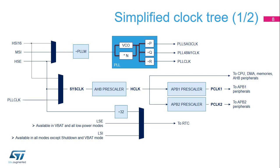The RTC clock is generated by the low-speed external 32.768 kHz oscillator (LSE), the low-speed internal 32 kHz RC oscillator (LSI), or the HSE divided by 32. This selection cannot be modified without resetting the backup domain. The LSE can remain enabled in all power modes and in VBAT mode. The LSI can remain enabled in all modes except shutdown and VBAT modes. Note that the P, Q, and R dividers present in the PLL are outside the closed loop, and therefore they can be changed without unlocking the PLL.